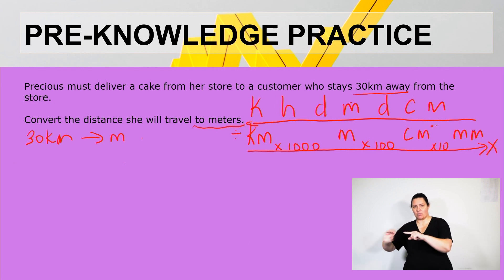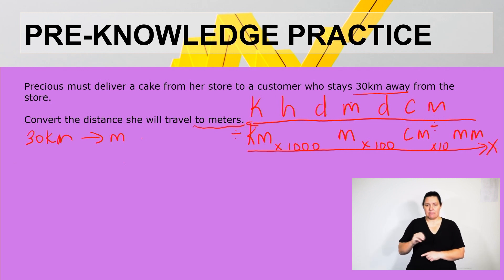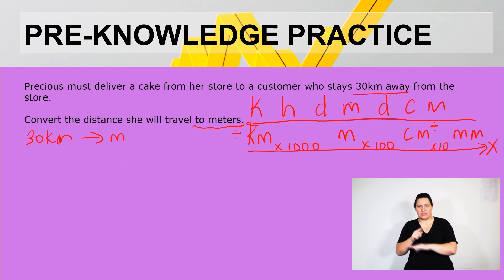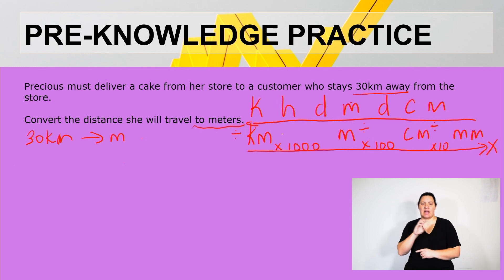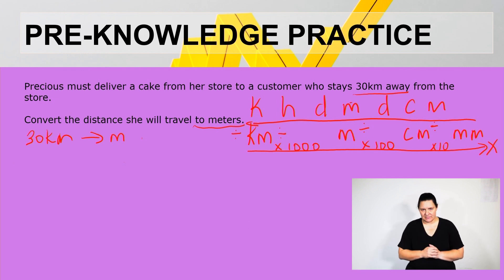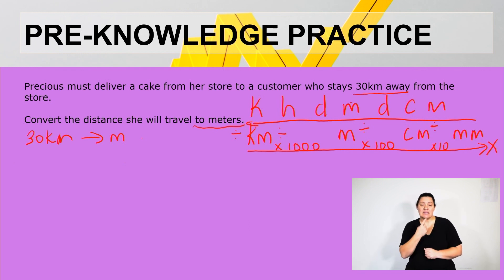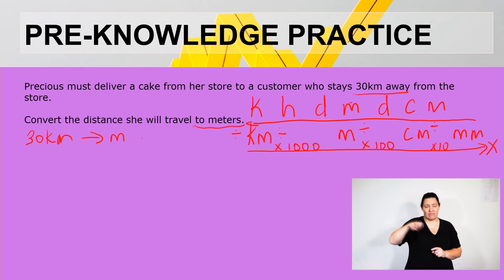If you want to move from millimeters to centimeters, you use the same value but this time you divide by 10. From centimeters to meters you divide by a hundred, and from meters to kilometers you divide by a thousand. Let's go back to the question — it said convert the distance she will travel to meters.